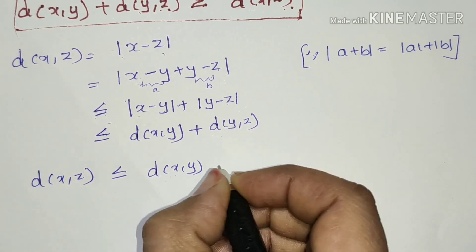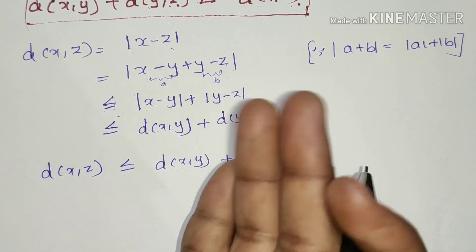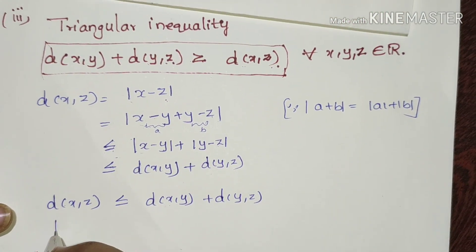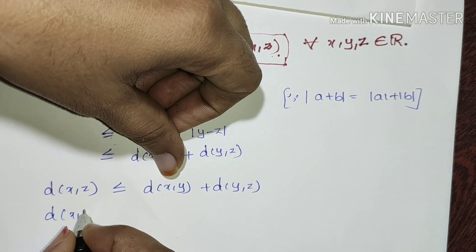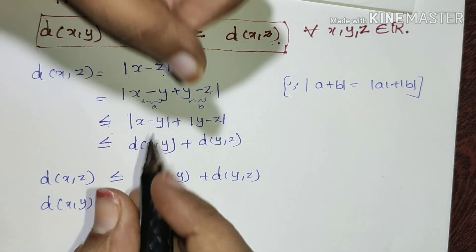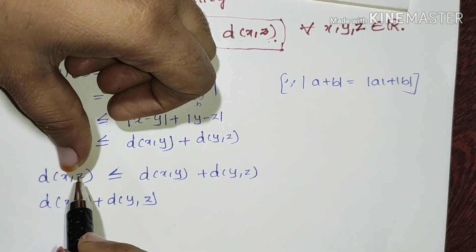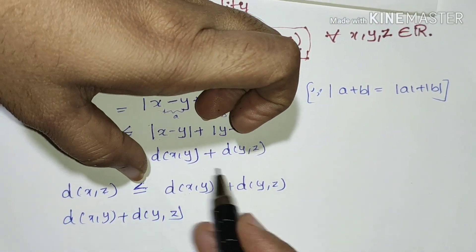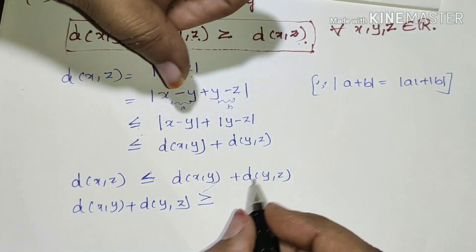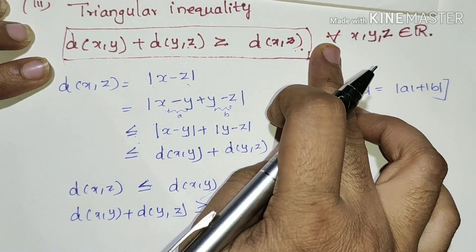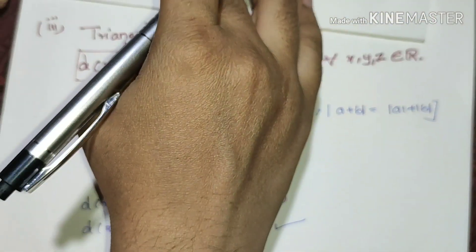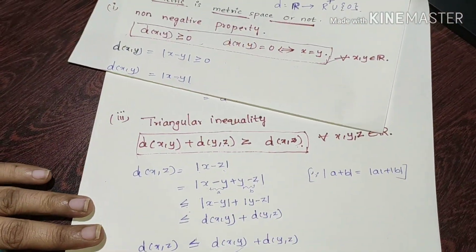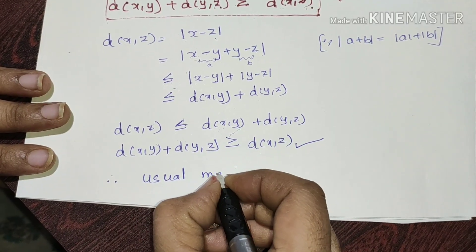Therefore, distance of x, z is less than or equal to distance of x, y plus distance of y, z. The triangle inequality is proved. All three conditions are satisfied, so the usual metric is a metric space.